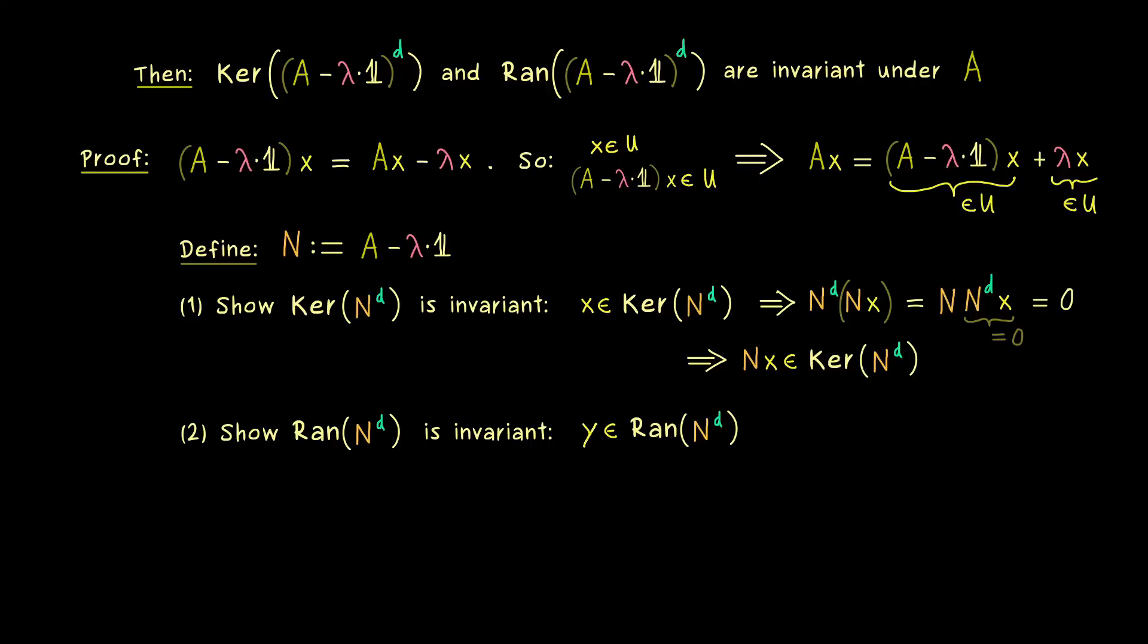Therefore, the only thing that remains to show now is that the range is also invariant under N. So it's exactly the same idea: let's take a vector y in the range of N to the power d, and then let's check if N times y also lies in this subspace. And in order to show that, we have to use what it means to be in a range of a matrix.